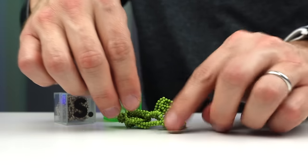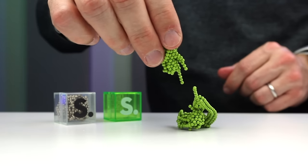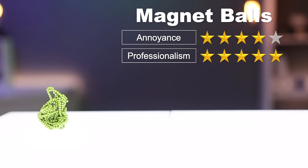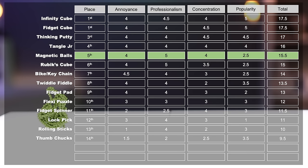These little magnetic balls by Spex, also known as Bucky balls, are great for making shapes and squishing around your hand. They also look great on your desk. Because of this, they get four for annoyance, five for professionalism, four for concentration, and two and a half for popularity, putting it right on the upper half of the list.